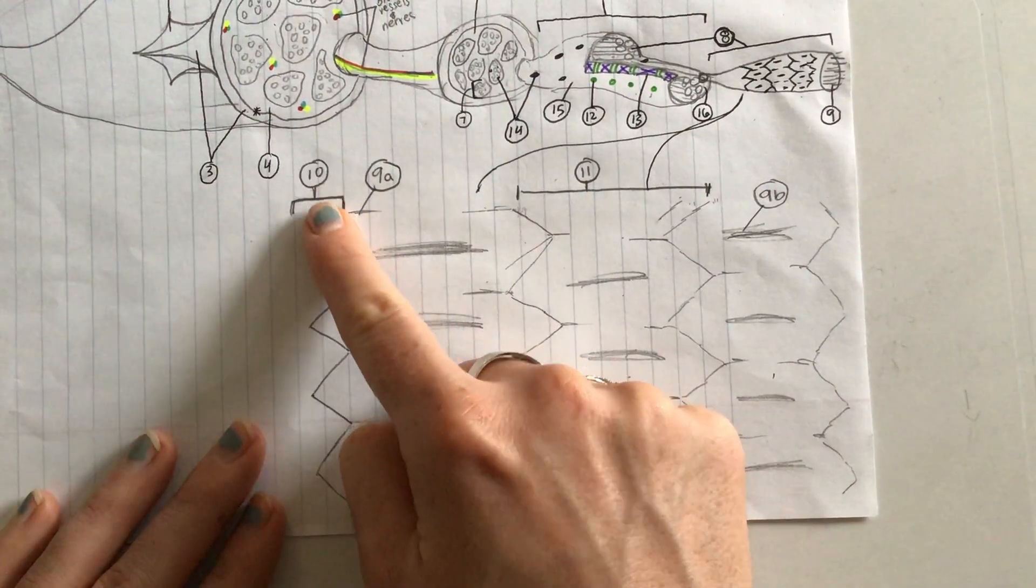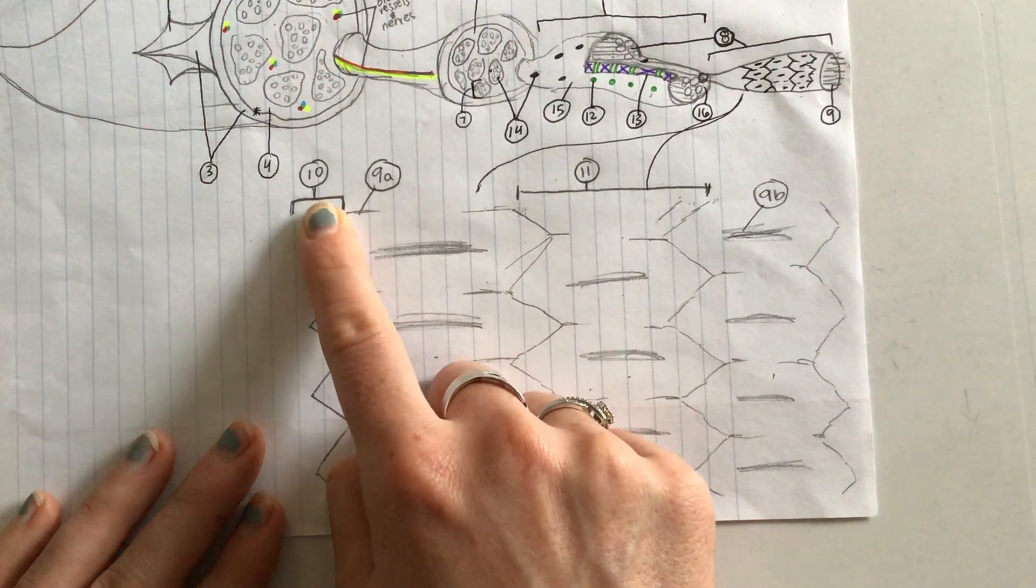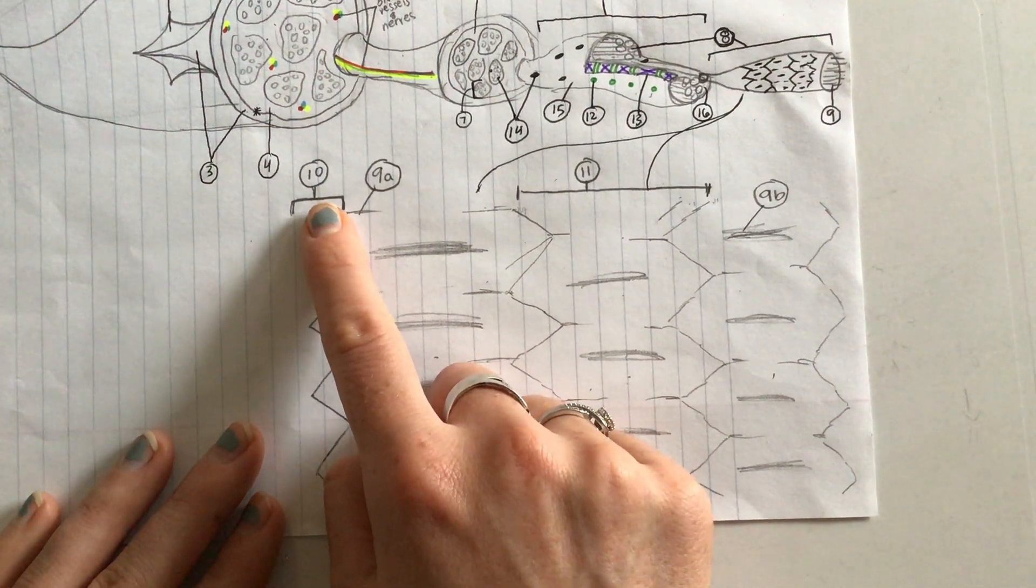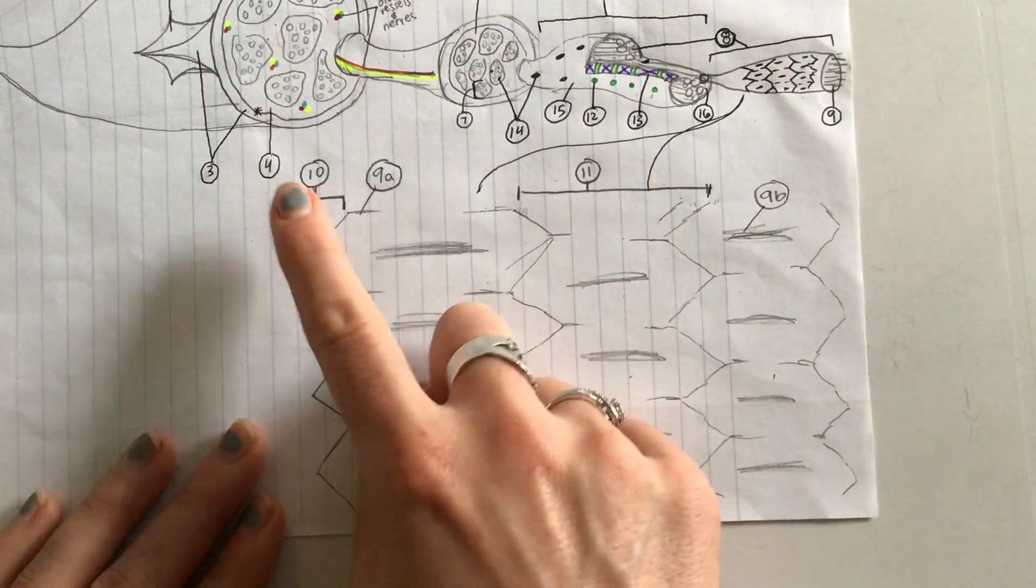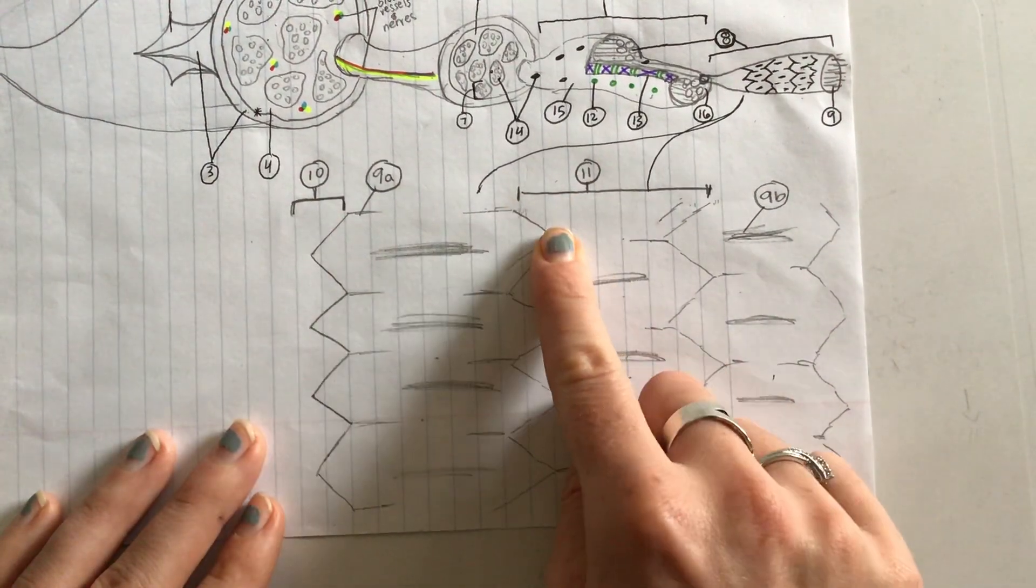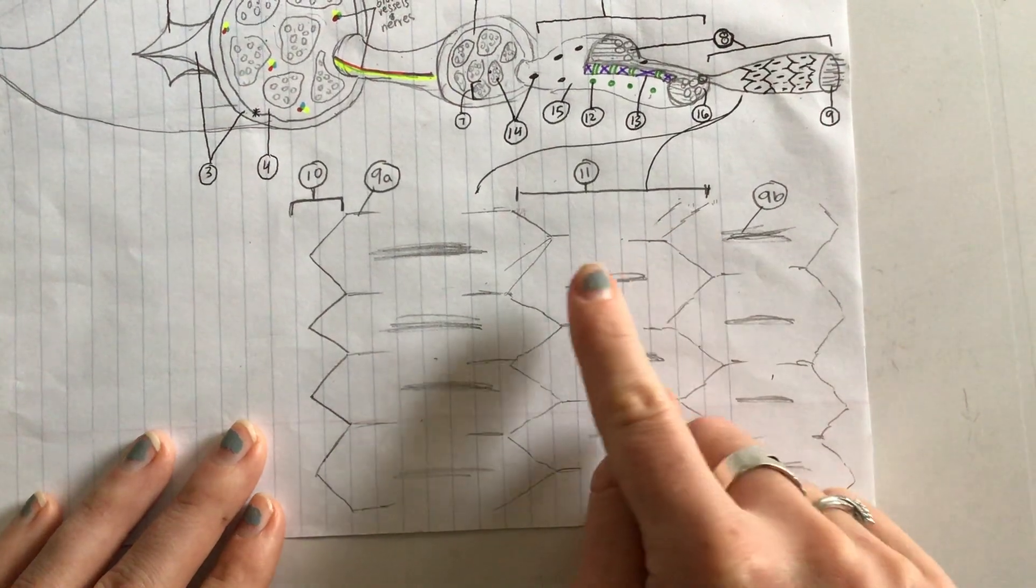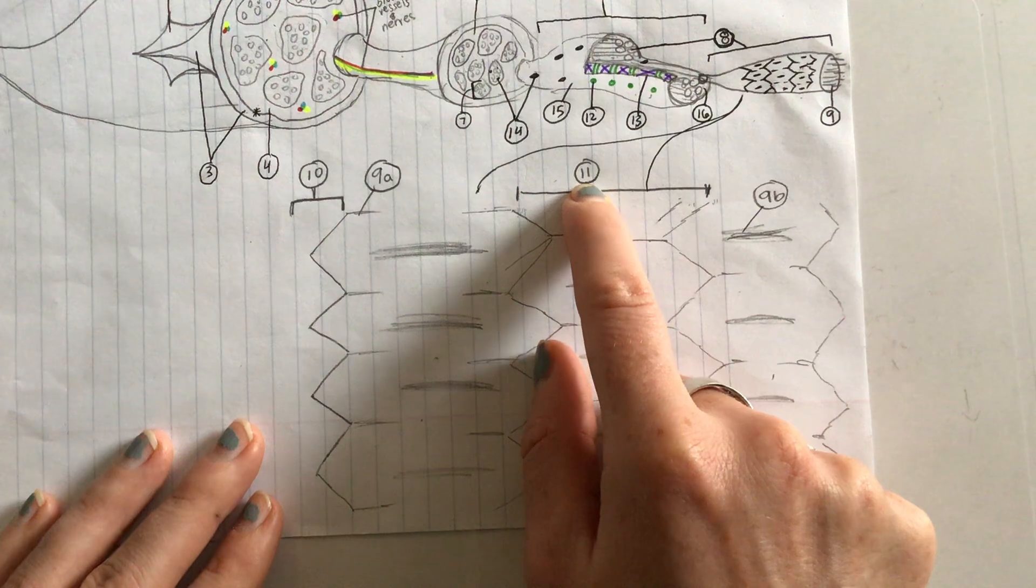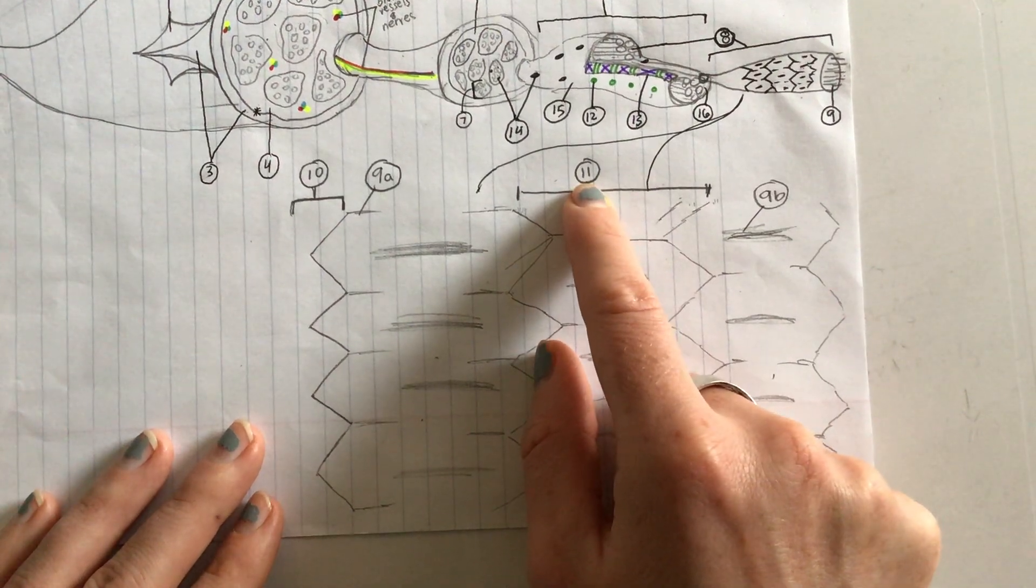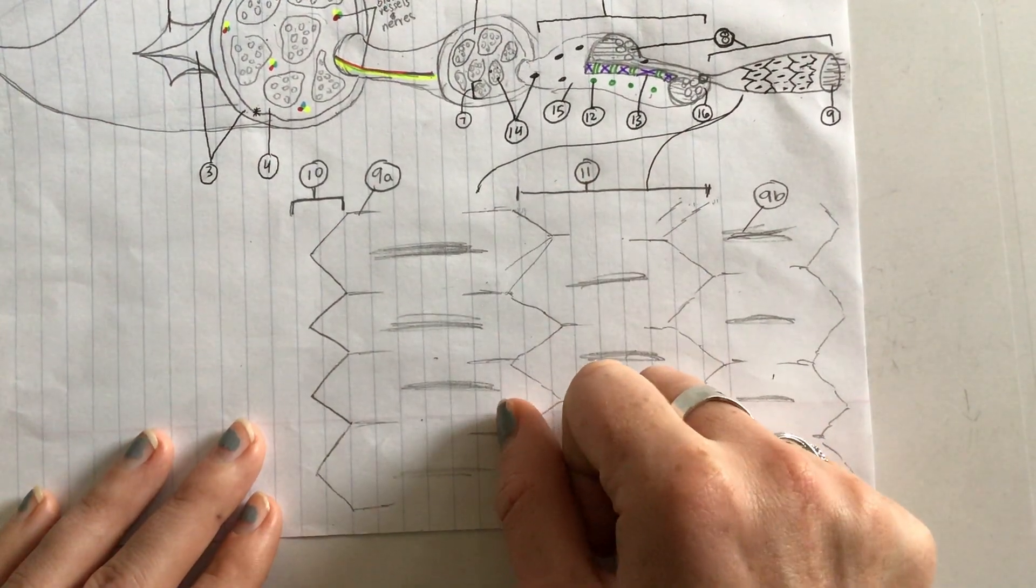What is number 10? Here from number 10, which is a z line, from z line to z line filled with both actin and myosin, we have number 11, which is a single sarcomere, the contracting units of muscle cells.